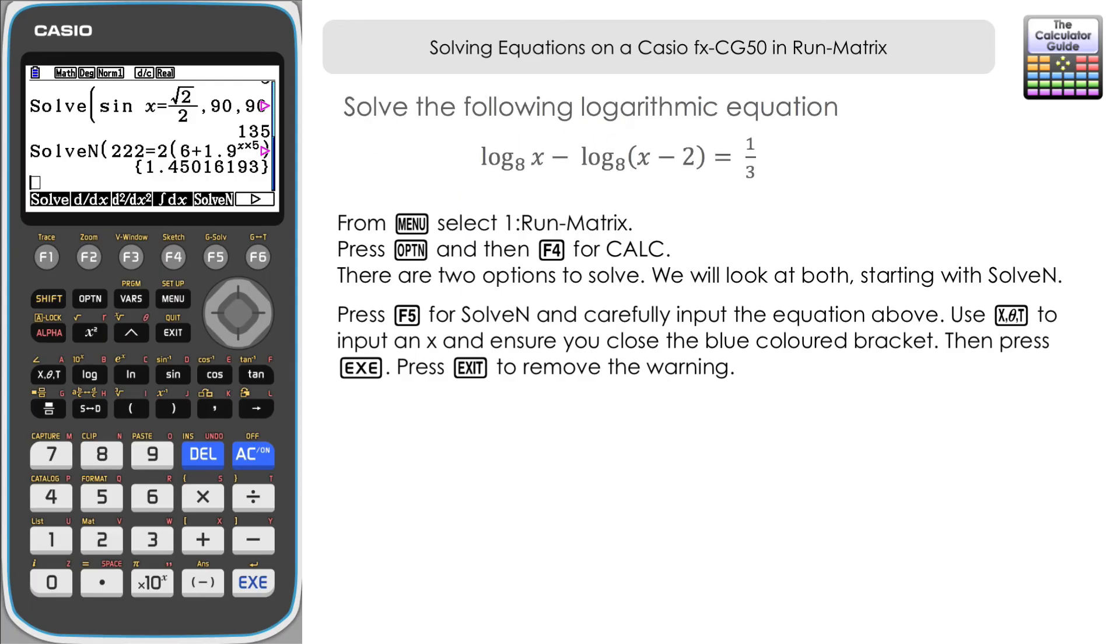And the final example here is solving a logarithmic equation. We have log₈(x) - log₈(x-2) = 1/3. So once again for simplicity we're going to use SolveN here. And if we want to access the log what we need to do is press F6 to the next part of this menu. We see log_a(b) there.